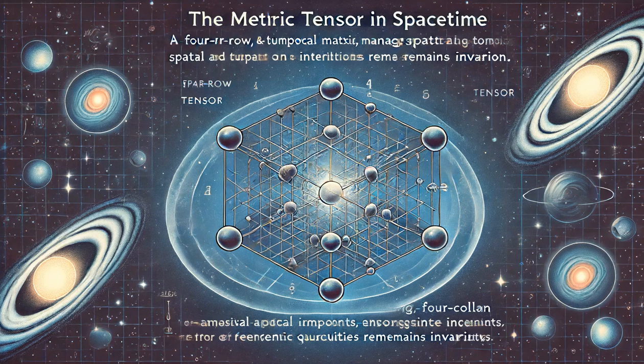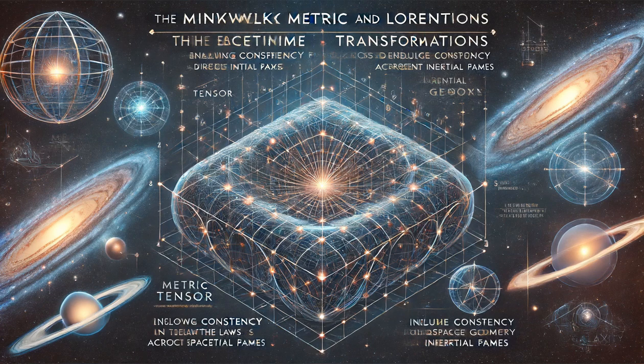This distinction between spatial and temporal components is crucial for understanding relativistic effects, such as time dilation and length contraction, that arise from the invariant nature of spacetime intervals.